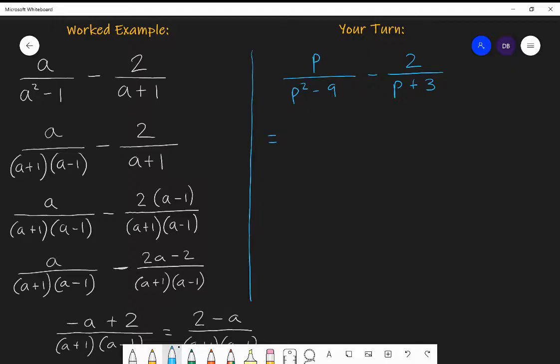So this is equivalent to, again, we have difference of two squares. So it's P over P plus three, P minus three, minus two over P plus three. And then the common denominator will be P plus three, P minus three. So it'll be P over P plus three, P minus three.